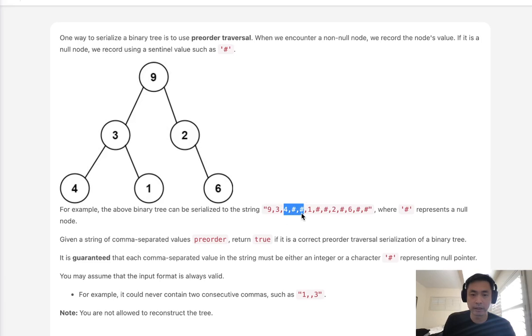So if that's the case, there should never be a situation where there's three null nodes in a row. Like we can't have four null null. That makes no sense. So that's one key insight.